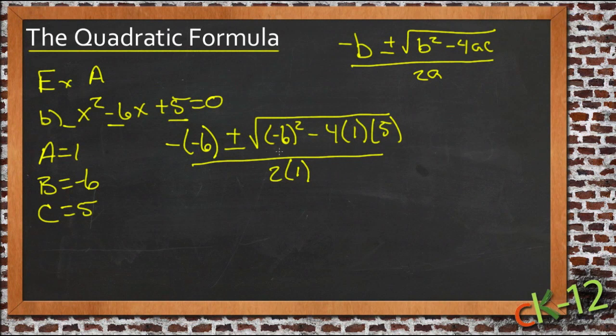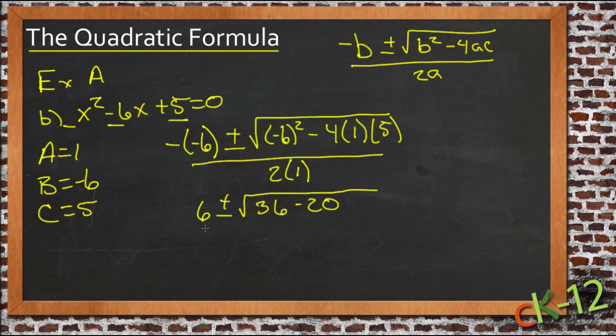So now we simplify everything we can. We get negative negative 6, that's just 6, plus or minus the square root of negative 6 squared, that's 36, minus 4 times 1 is 4, and 4 times 5 is 20, so minus 20, all over 2 times 1, which is 2.